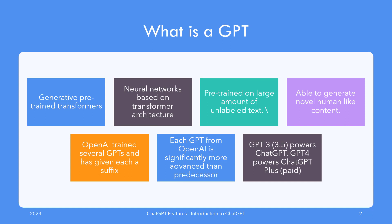Before understanding what ChatGPT is, it's important to understand what GPT is. GPT, or Generative Pre-trained Transformers, are neural networks based on transformer architecture, details of which may be too complex and hence are beyond the scope of this video. GPTs are pre-trained on large amounts of unlabeled text and are able to generate novel human-like content. OpenAI has released a series of prominent GPT models, each one being significantly more powerful and feature-rich than its predecessor.